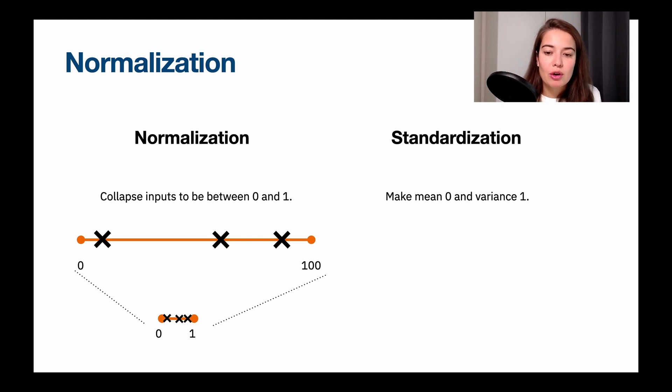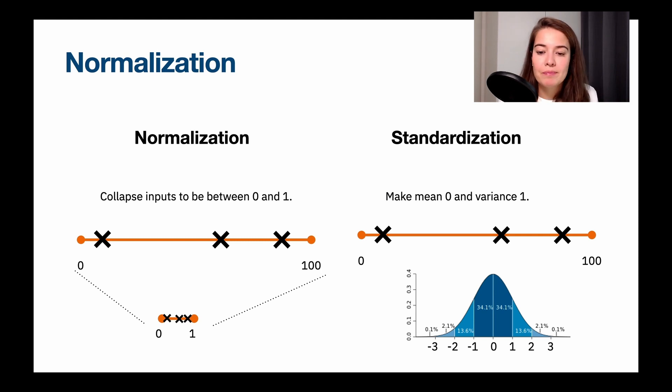For standardization, it's a little bit more complicated than that. If we have the same numbers, what's going to happen is that we're going to put them in such a place so that their mean will be zero, but also their standard deviation or variance will be one. What that means is 34.1% of the numbers that we have will be well, we only have three right now.